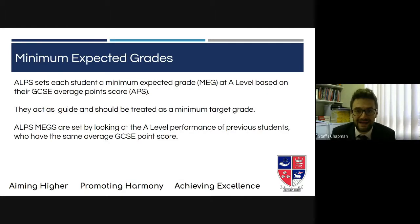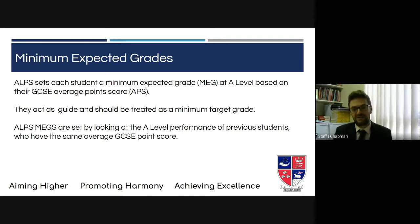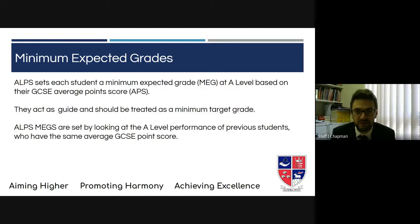The minimum expected grade at A-level is based on the GCSE average point score, otherwise known as APS, of the student. This acts as a guide but it should be very clear — it is treated as a minimum target grade. We want, we expect, we hope many of our students to go beyond the minimum target grade. The way those ALPS MEGs are set is by looking at the A-level performance of previous students who have had the same average GCSE point score, and I'm going to give you an example now to explain how that process works.